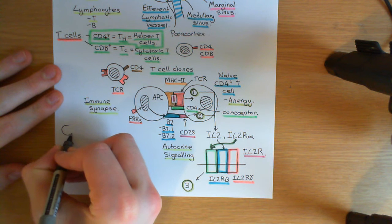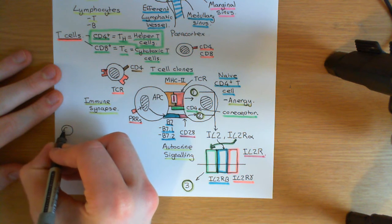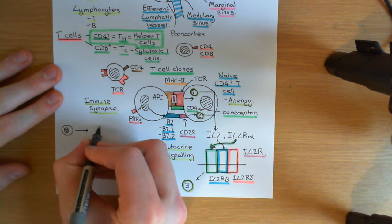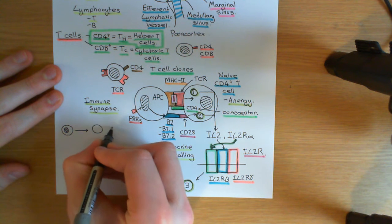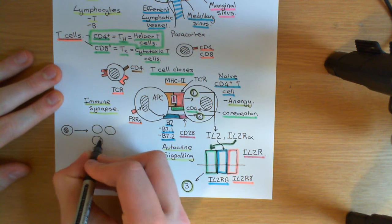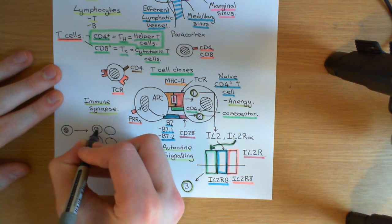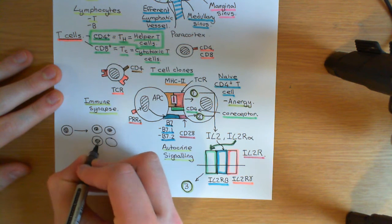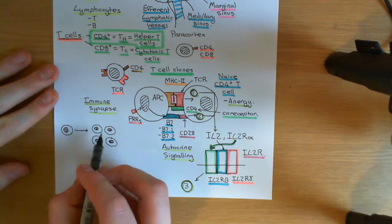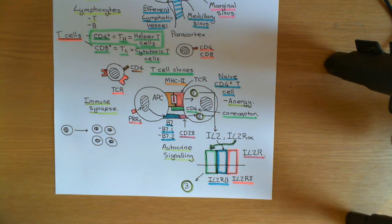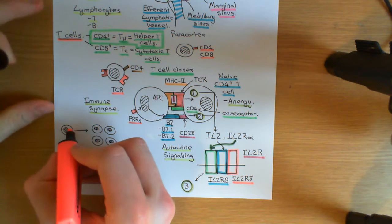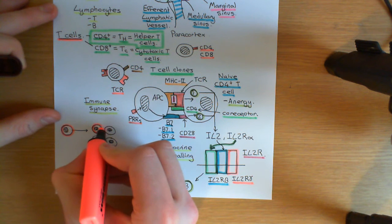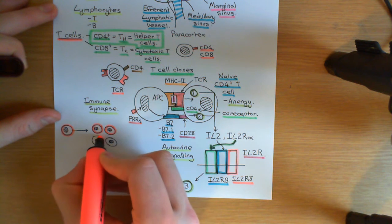The first thing that's going to happen is it's going to divide and divide and divide in the lymph node. We're going to go from having one of these T-cells to having absolutely loads of them — let's go for four of them, but in reality you'd get far more. You'd get a huge number of them. And all of its progeny are going to have the identical design of T-cell receptor — that's extremely important.